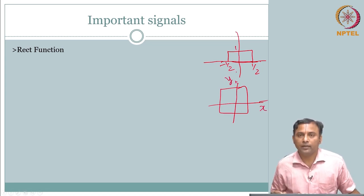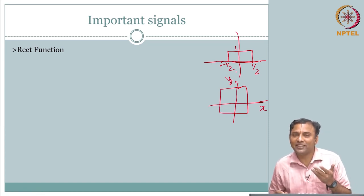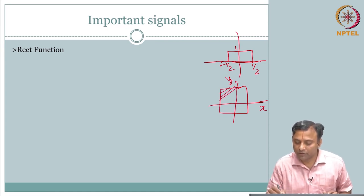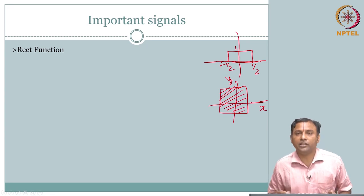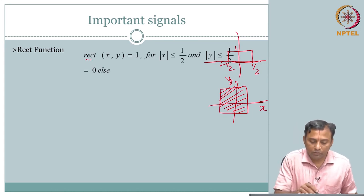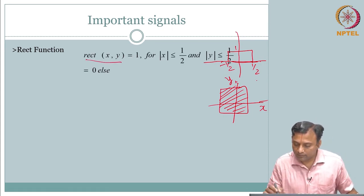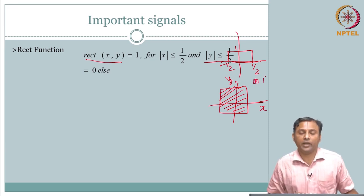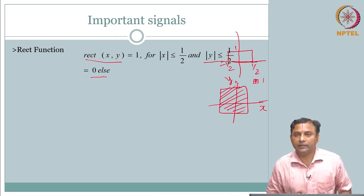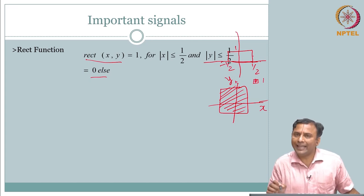If you have to visualize, you need to have the third dimension. So I am just going to shade this and say the shaded area has value 1. Your rect of x, y — the legend says this shaded region represents 1 and rest of the places it is 0. So this is your rectangular function — it is a direct extension of 1D, and this is a unit area.